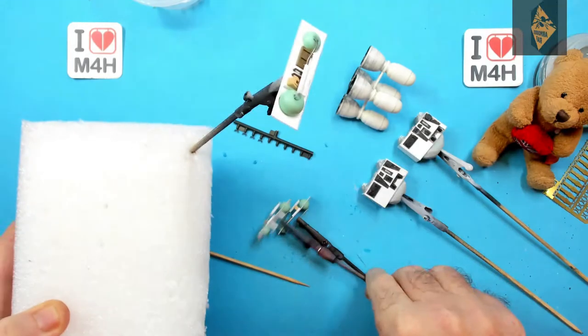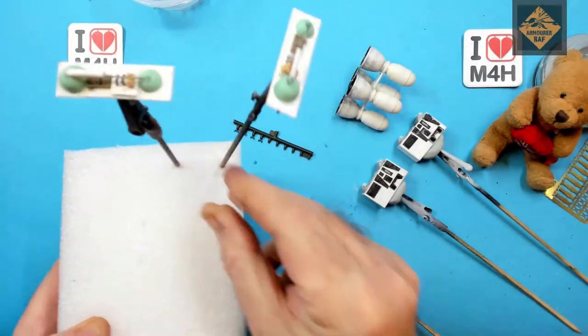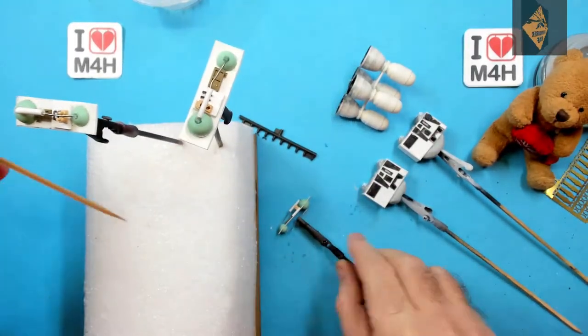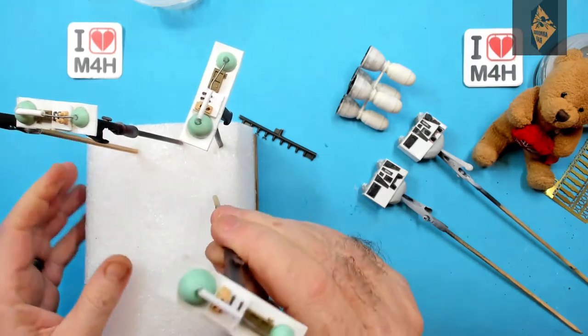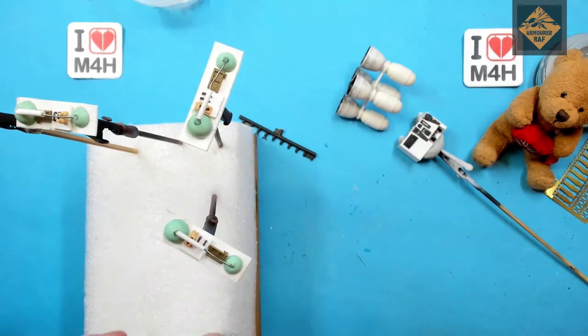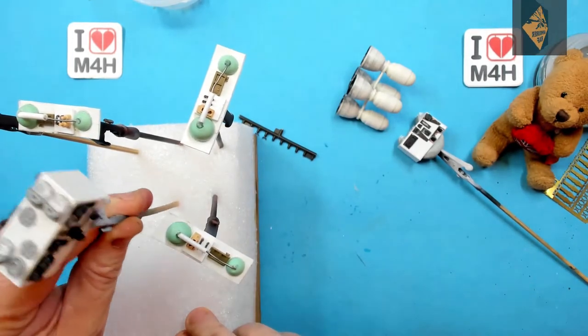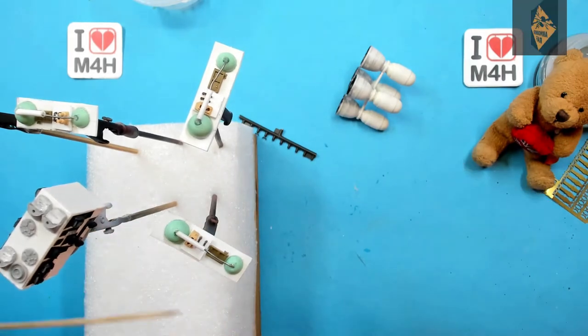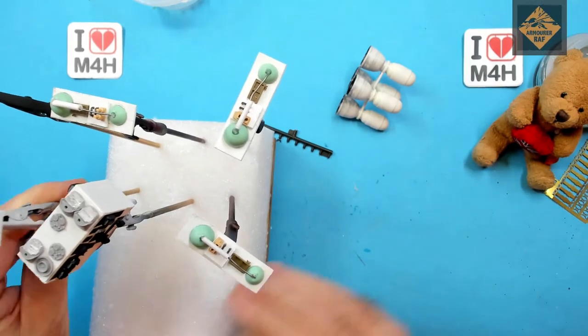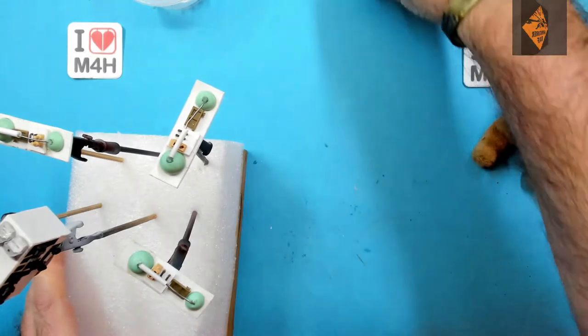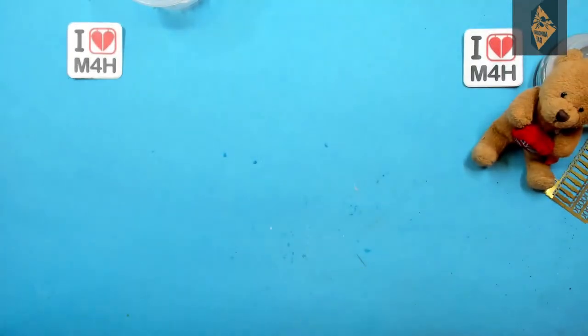Then what I do is glue high density foam to it, you know the type you get in packaging for laptops and stuff like that. I use this sort of foam instead of polystyrene because the polystyrene falls apart really quickly, but the high density foam is self-sealing. So you can use it time after time after time.